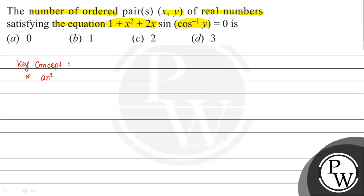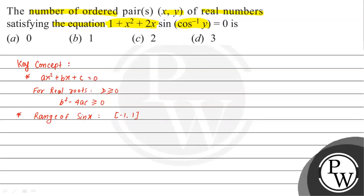Suppose we have a quadratic equation ax² + bx + c = 0. The real roots condition is that the discriminant should be greater than or equal to 0, that means b² minus 4ac should be greater than or equal to 0. The second concept is the range of sin(x), which is from minus 1 to 1.